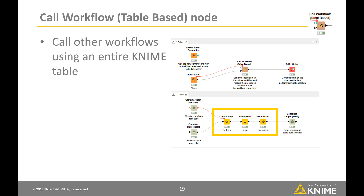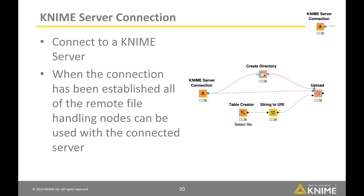A caller workflow can send a table and flow variables to another workflow and receive a table from the callee via new container input/output nodes. The Container Input Table receives a table from a caller workflow, the Container Input Variable receives flow variables, and the Container Output Table sends a table back to a caller workflow. The KNIME Server Connection node allows the user to connect to a KNIME server, and all remote file handling nodes can then be used with that connected server. The connection can also be used together with the Call Workflow Table Base node to run workflows shared on a KNIME server.